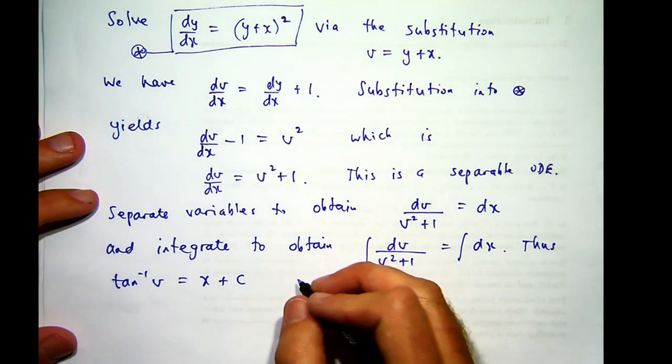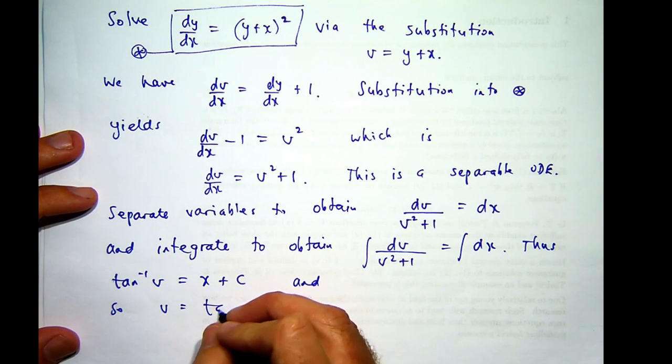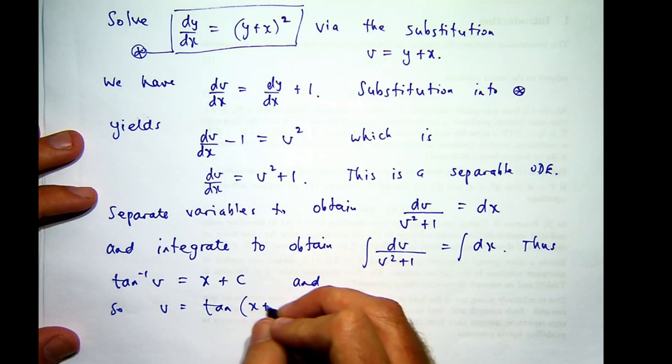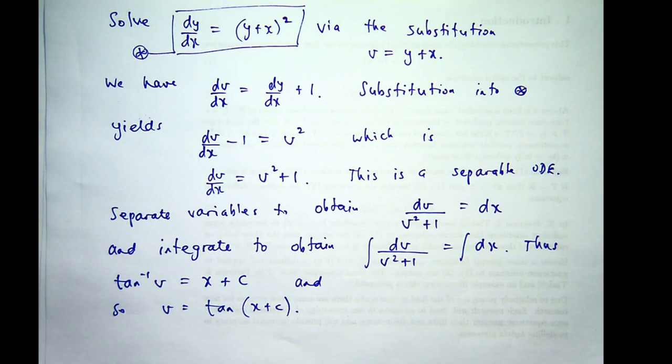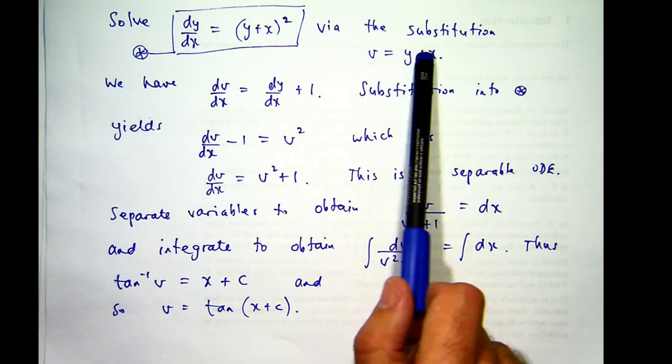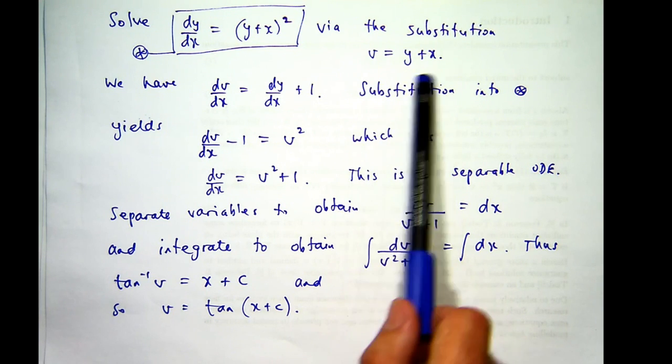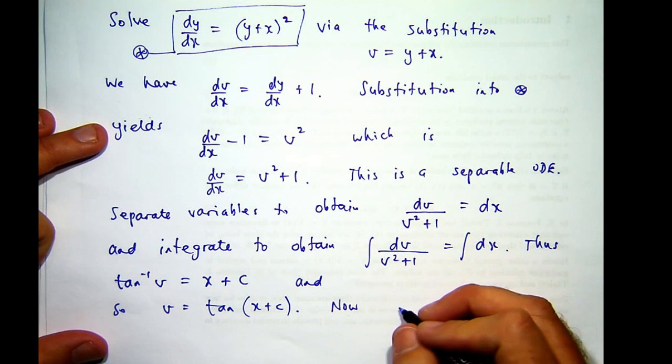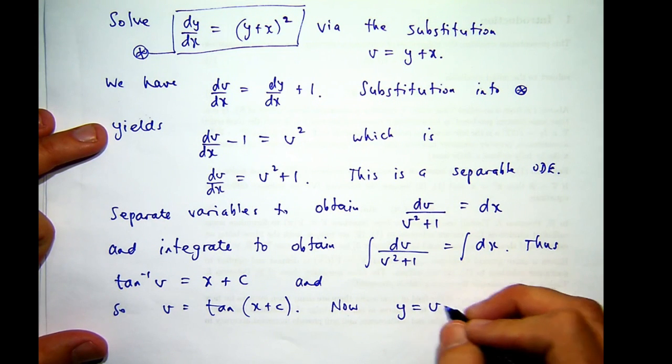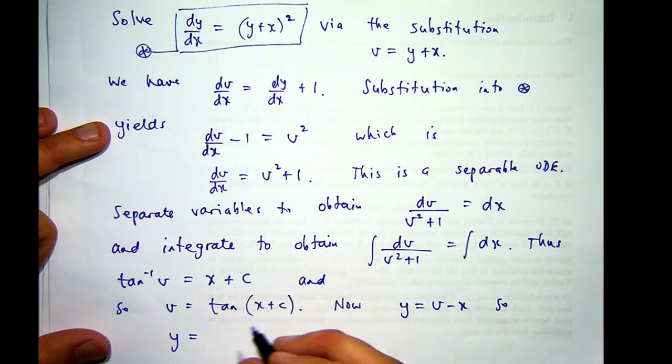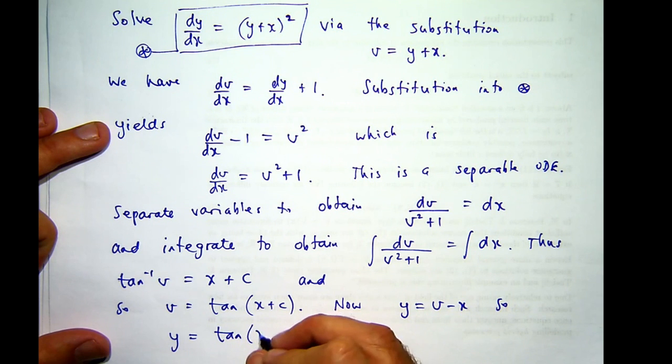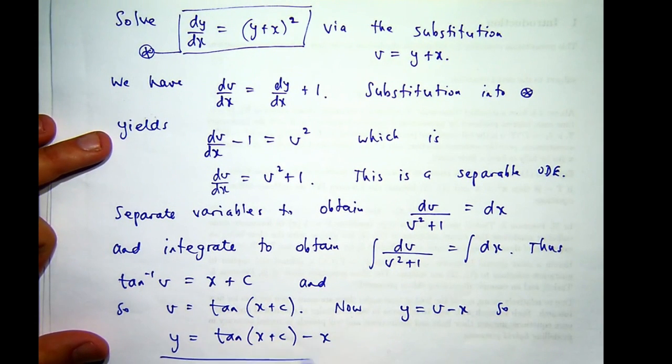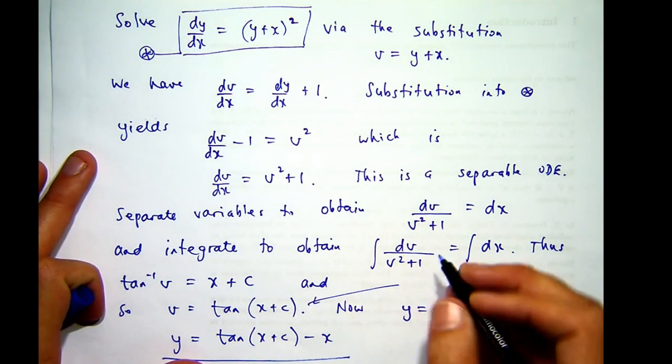So if I rearrange this, just taking tan of both sides. All right, so we've solved for our function v, but what we really want is to solve for y. So what we would do is - if that's v, and y and v are related by this relationship here, then essentially y is v minus x. So this, then, is our solution, where c is a constant.